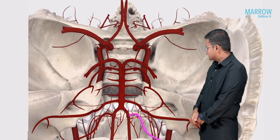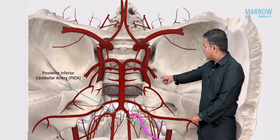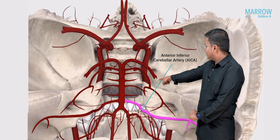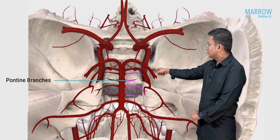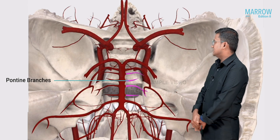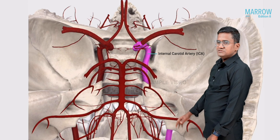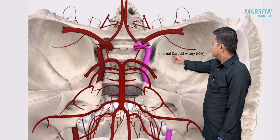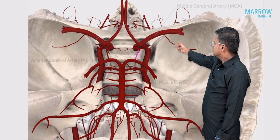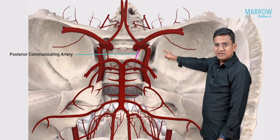Some specific branches to note: the posterior inferior cerebellar artery (PICA) is a branch of the vertebral artery. The anterior inferior cerebellar artery (AICA) is a branch of the basilar artery, along with numerous pontine branches. The internal carotid artery gives two terminal branches: the anterior cerebral artery and the middle cerebral artery. We also see the posterior communicating artery, a branch of the internal carotid.